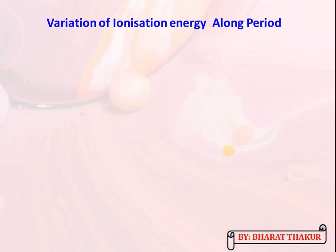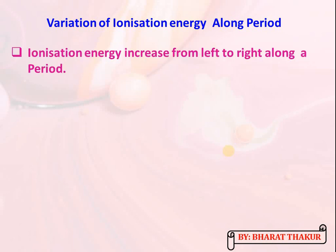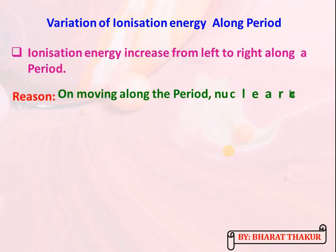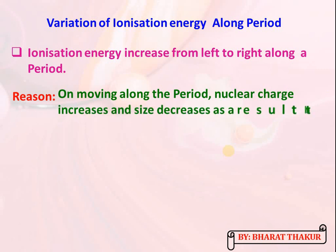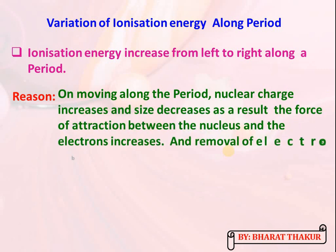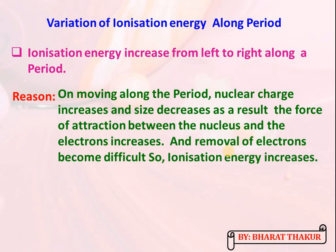Variation of ionization energy along a period: ionization energy increases from left to right. The reason is that moving along the period, nuclear charge increases and atomic size decreases, so the force of attraction between the nucleus and electrons increases. Electrons are tightly held and removal becomes difficult, so ionization energy increases.